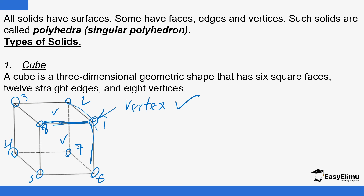All solids have surfaces; some have faces, edges, and vertices. Such solids are called polyhedra — if there is one it is called a polyhedron. We have different types of solids, and they have different characteristics. For example, a cube is a three-dimensional geometrical shape that has six square faces, 12 straight edges, and eight vertices. We can be given a solid and asked about its characteristics — how many edges, faces, and vertices it has.